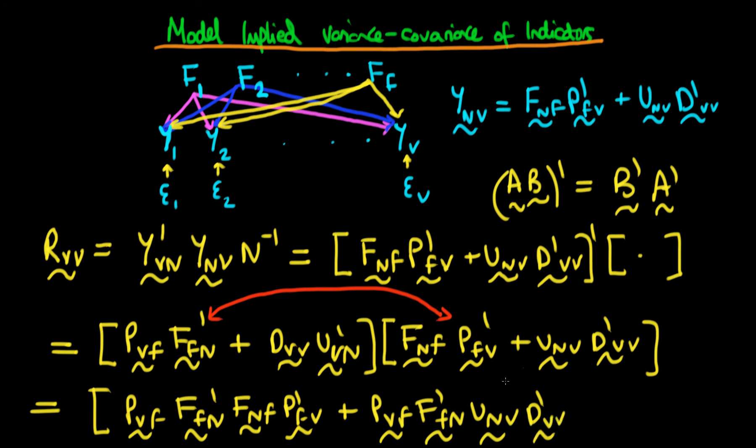We could then do the same for the last two components. And what we're going to then do is we're going to use this expanded form of our matrix, making sure that we're just multiplying this whole thing by the inverse of n. We're going to use this expanded expression here to help us derive the model-implied variance covariance of our indicators.